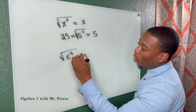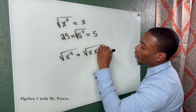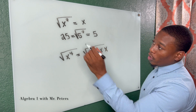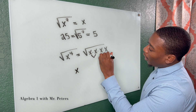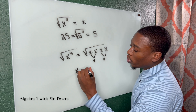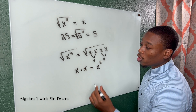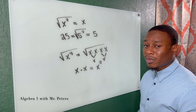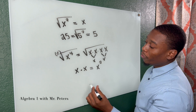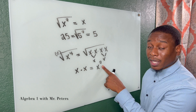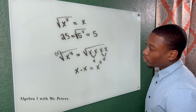For a higher exponent like x to the fourth power: x squared equals one pair giving us one x, and another x squared gives a second x, so multiplying x times x gives x squared. A shortcut is to divide the exponent by the root — 4 divided by 2 gives x squared.